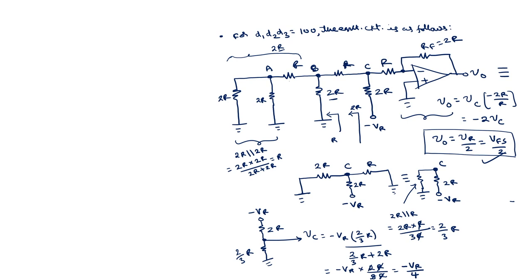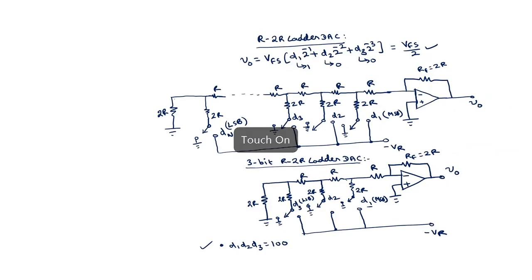Similarly, we can take other possibilities for D1, D2, D3, which are somewhat more complicated. We can then generalize the expression as V0 = V_fs × (D1 × 2^(-1) + D2 × 2^(-2) + D3 × 2^(-3)). I will now take the case of D1D2D3 = 001.